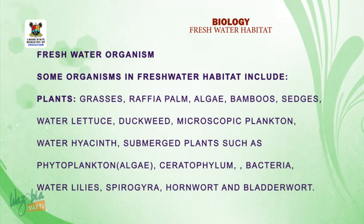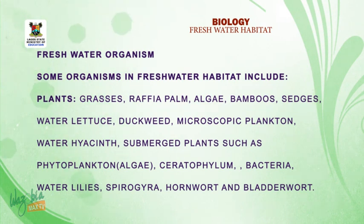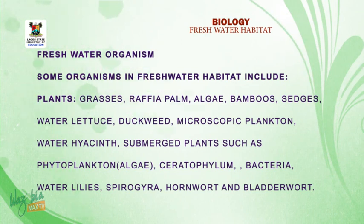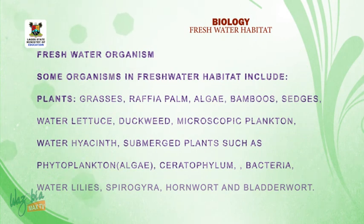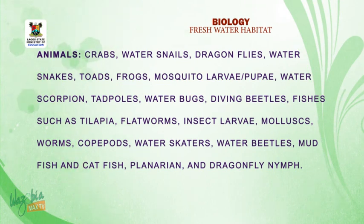Let's look at the plants. We have plants like grasses, raffia palm, algae, bamboos, sedges, water lettuce, duck weed, microscopic plants, water ferns, and submerged plants such as phytoplankton like algae, Ceratophyllum species, bacteria, water lilies, spirogyra, hornwort, and bladderwort. The diagram below shows how we group them according to the different zones of the water — the surface, the top, and the bottom.